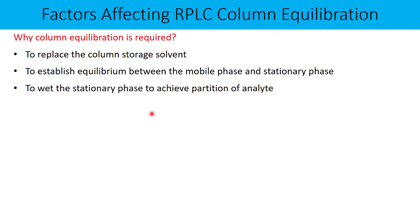The third point is very interesting and important: to wet the stationary phase to achieve partition of the analyte. In reverse phase liquid chromatography, our column is naturally hydrophobic or nonpolar. If our mobile phase doesn't wet the hydrophobic stationary phase, our analyte cannot reach the active sites present on the bonded stationary phase like C8 or C18. So the entire bonded phase has to be properly wetted, and this is possible by proper column equilibration with the mobile phase.